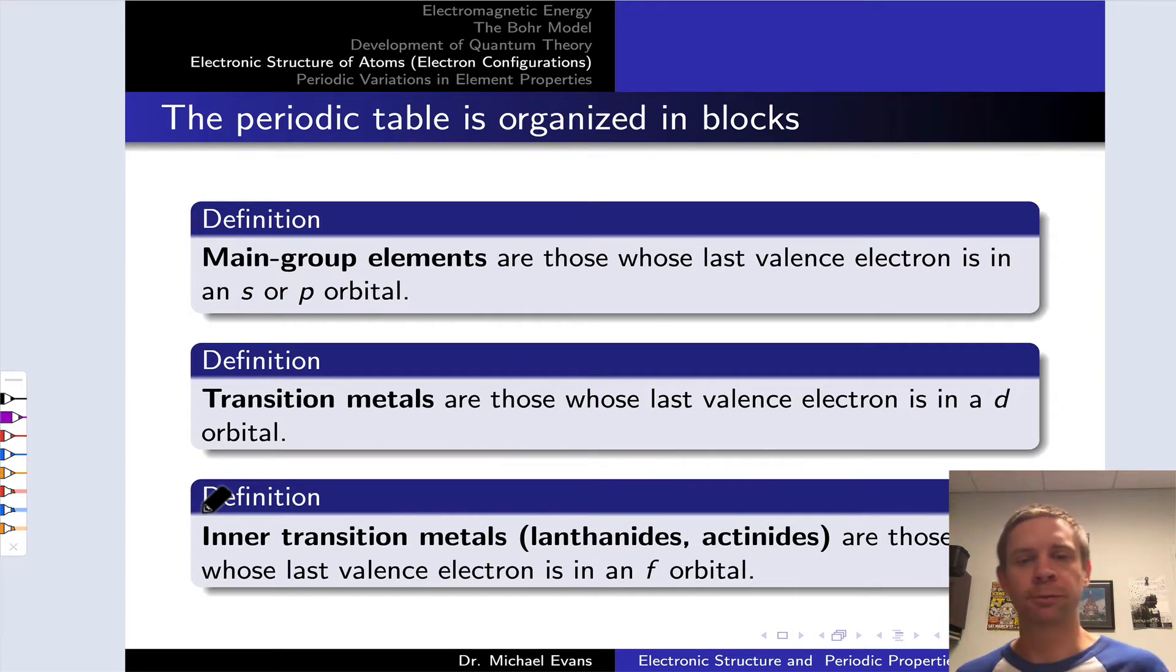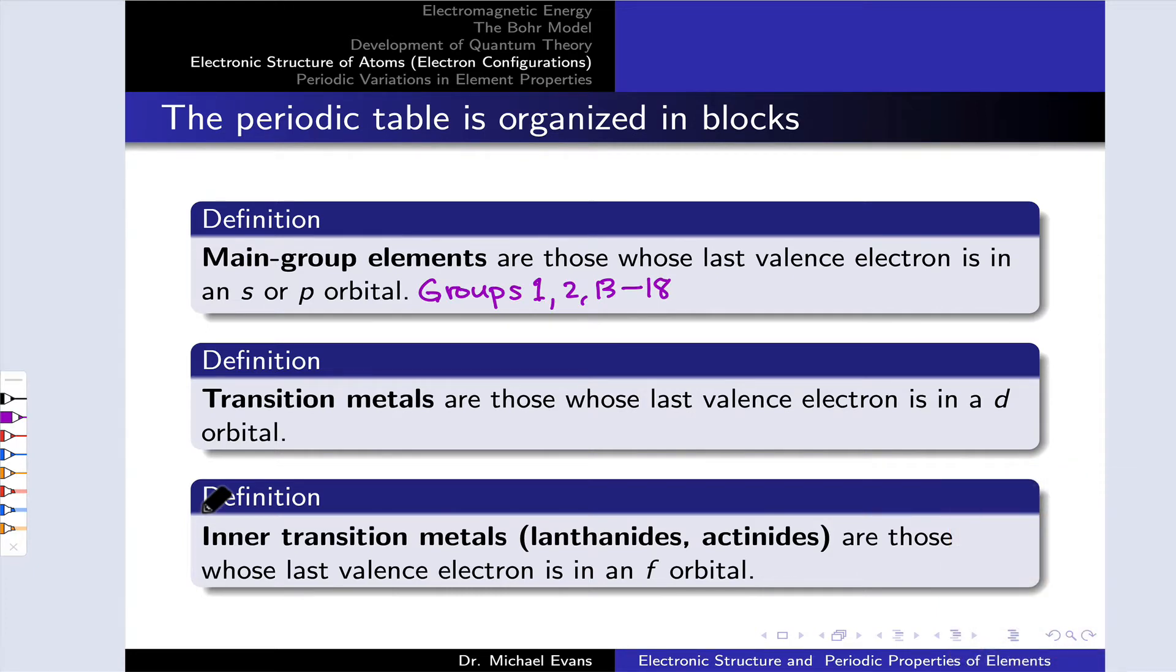So the main group elements, for example, are those whose last valence electron just went into an s orbital or a p orbital, and that's groups 1, 2, and 13 through 18.